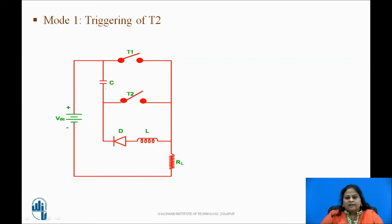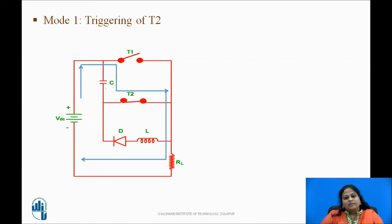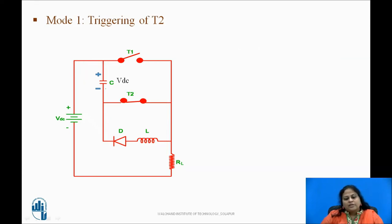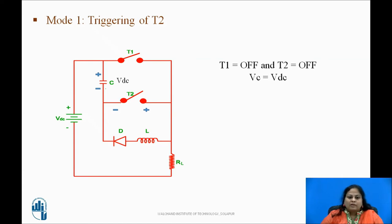In mode 1, T2 is triggered. Initially, before triggering the main thyristor T1, T2 is triggered. This makes T2 act as a closed switch. As soon as T2 turns on, the capacitor starts charging with the polarity as shown, through the path Vdc+ → C+ → C− → T2 → RL → Vdc−. As soon as the capacitor is fully charged to Vdc, the voltage across the capacitor decreases the current through T2, and the equivalent potential difference across T2 makes it reverse biased. Due to this, T2 turns off. Thus, at the end of mode 1, T1 is off, T2 is off, and Vc equals Vdc.